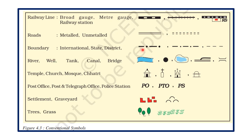Boundaries between countries, states, and villages are shown differently. Boundaries between countries are shown by using a dark broken line with a dot between them. Between states it is lighter, and district boundaries are shown only with a broken line — no dot is found between them.